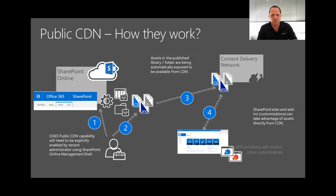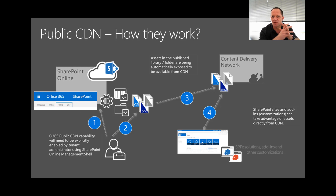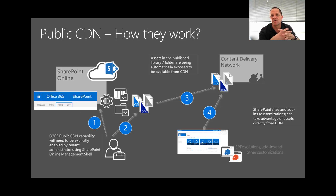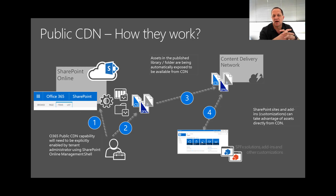Now that you've seen what CDNs do for us, let's jump into what public CDNs are and how they work. Looking at this diagram — which is available online — it's a little more complicated than it is. In step one, a user makes a call to SharePoint Online. That call says go and give me the CSS, the PNG, the JavaScript, the JPEG — whichever files it needs. Those could be a logo on the page, the style sheet being used as CSS, or a JavaScript file.